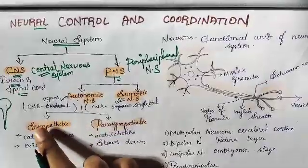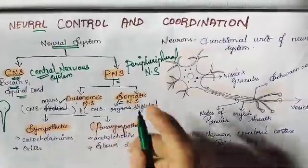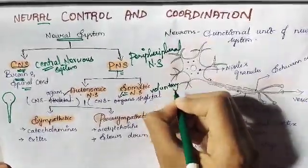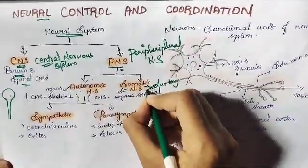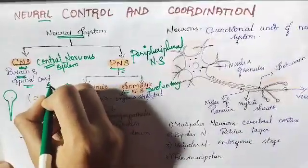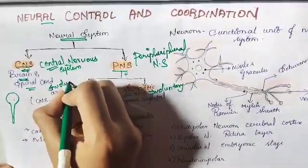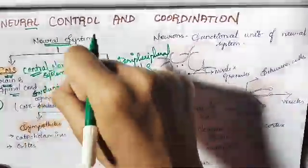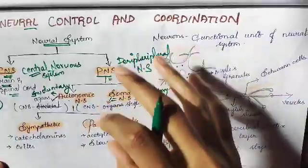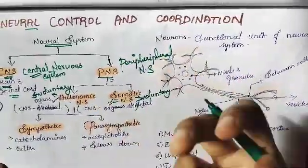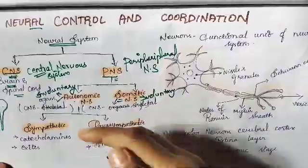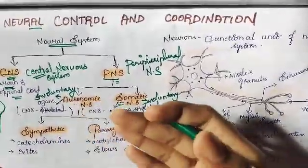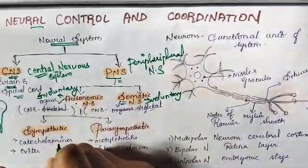The autonomic nervous system is again of two types because the somatic nervous system controls voluntary action, while the autonomic nervous system controls involuntary action. Voluntary action means we voluntarily do that — like shaking my hands. But I can't control my heartbeat or my digestion. So what I can't control myself is controlled by the autonomic nervous system.